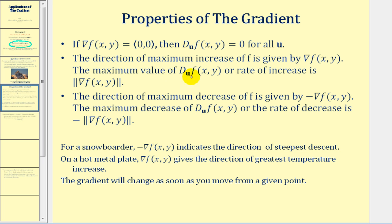The value of the directional derivative at x, y — or rate of increase — is given by the magnitude of the gradient of f of x, y. Connected to this, the direction of maximum decrease of f is given by the opposite of the gradient of f of x, y. And the maximum rate of decrease is given by the opposite of the magnitude of the gradient.